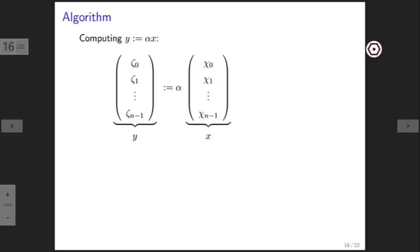Y becomes alpha times x. We expose the components of y, and notice that here I used the wrong Greek letter. I should have used psi 0, psi 1, and psi n minus 1. We need to compute alpha times x, where here we expose the individual components of x.